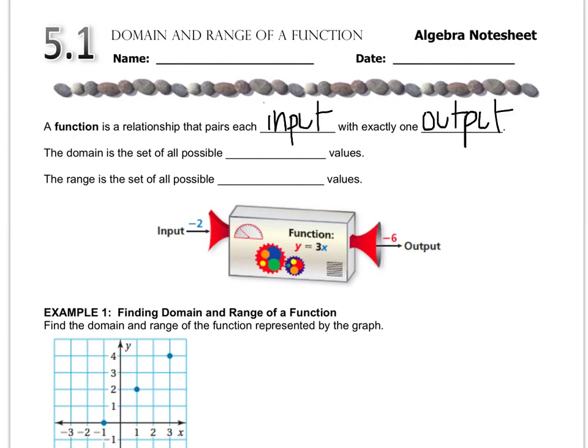In the next lesson we'll look a little bit more deeper into inputs and outputs. The domain is a set of all possible input values, and remember input is also the x values, and the range is a set of all possible output values, and output is also the y values.